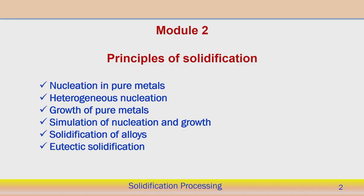Hello everybody. Today we will start with Module 2 of the Introduction to Solidification Processing course. In Module 2, we will try to understand the principles of solidification, which generally covers nucleation in pure metals as one subtopic. Heterogeneous nucleation is written separately because homogeneous nucleation will also be included under nucleation in pure metals. Then growth of pure metals and simulation of nucleation and growth — we will show some demonstration of how nucleation occurs during the solidification process of metallic materials.